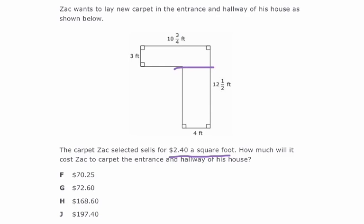So, on one side, I have 10 and 3 fourths, or 10.75, times 3. And if you do 10.75 times 3, you should get like 32.25. There we go, for that one.